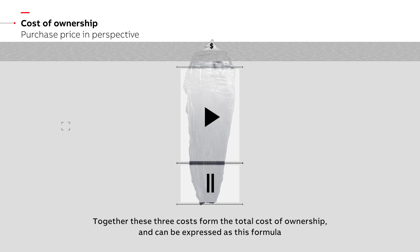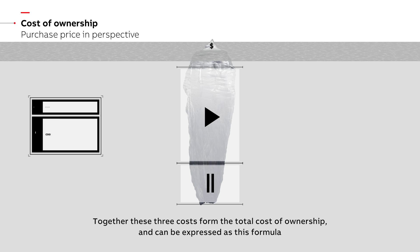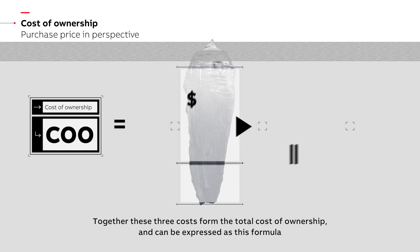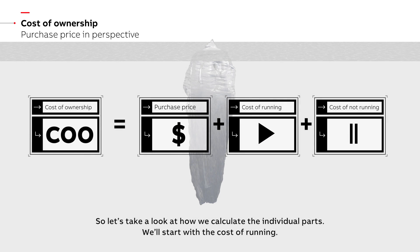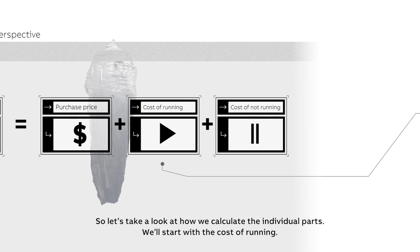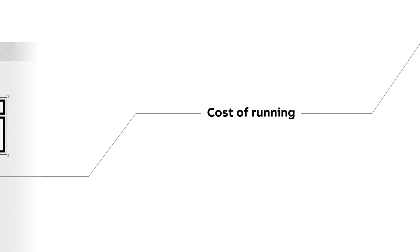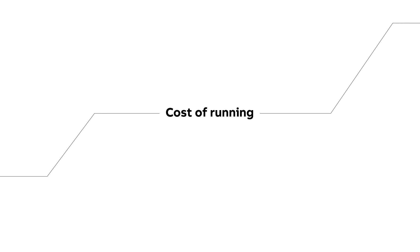Together these three costs form the total cost of ownership and can be expressed as this formula. So let's take a look at how we calculate the individual parts, starting with the cost of running.